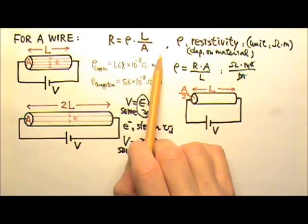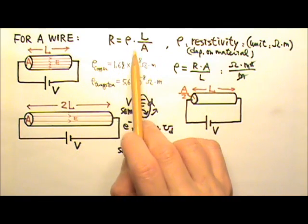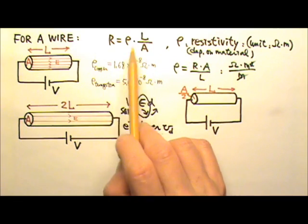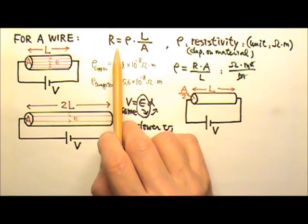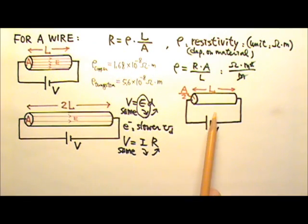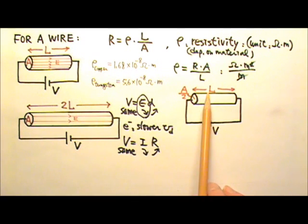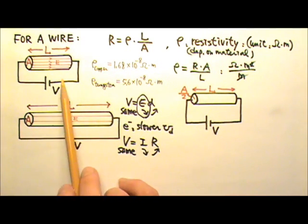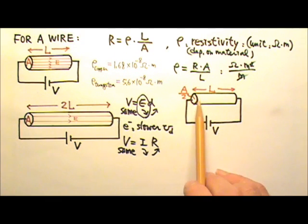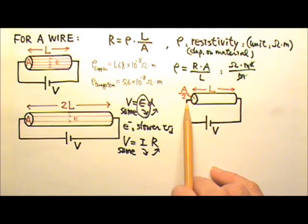This equation also tells us that for the same material wire, the smaller the cross-sectional area — the thinner the wire — the larger the resistance. Now let's compare two wires with the same length connected to the same voltage battery, but the second wire has half the cross-sectional area.